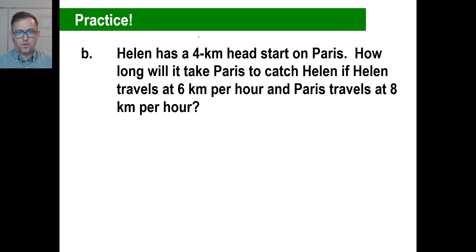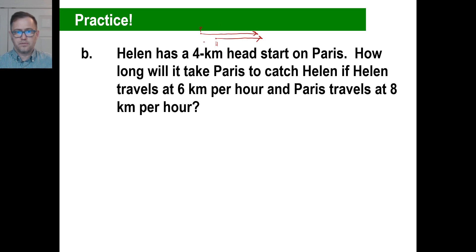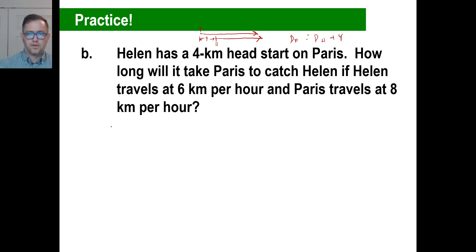Helen has a 4-kilometer head start on Paris. How long will it take Paris to catch Helen? Here's Paris, and Helen is 4 kilometers ahead. When Paris catches Helen their distances become equal, so the distance of Paris equals the distance of Helen plus 4. Written with rates and times: rate of Paris times time of Paris equals rate of Helen times time of Helen plus 4.